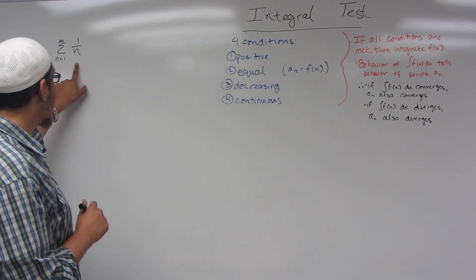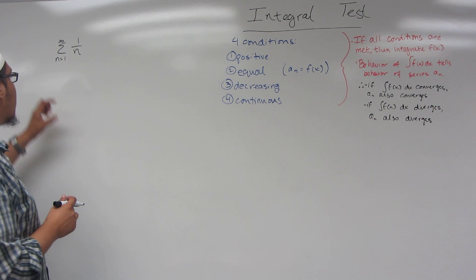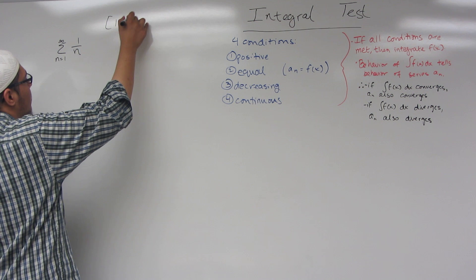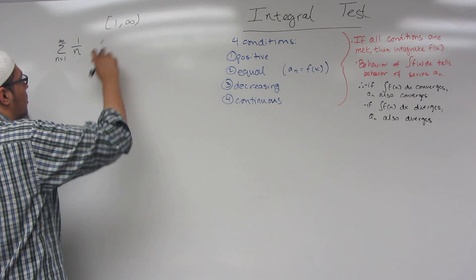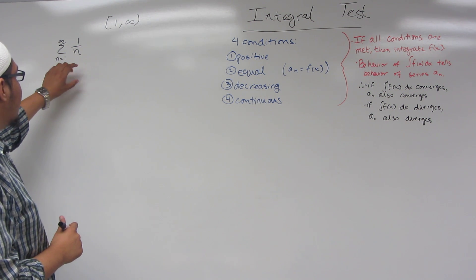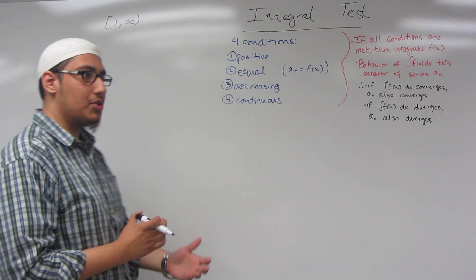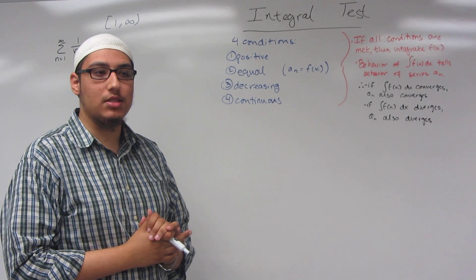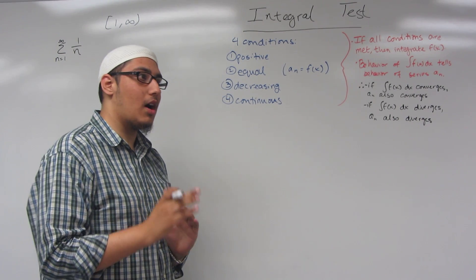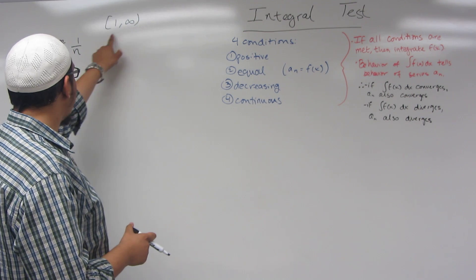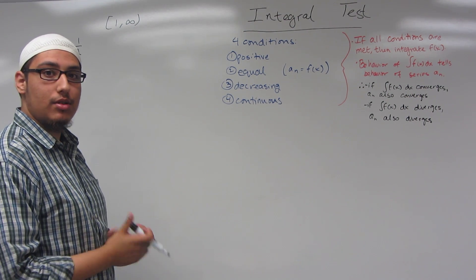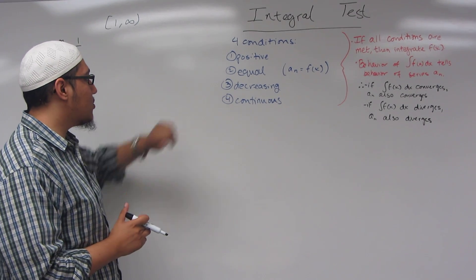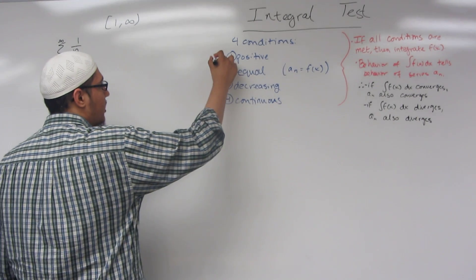Condition number one: is this series positive on the given interval? Keep in mind the interval here is 1 to infinity, including 1. For any number that we substitute in for n — 1, 2, 3, 4 — we're always going to end up with a positive result. If you're ever unsure, simply plug in numbers from the interval into the series. Condition number one is met.